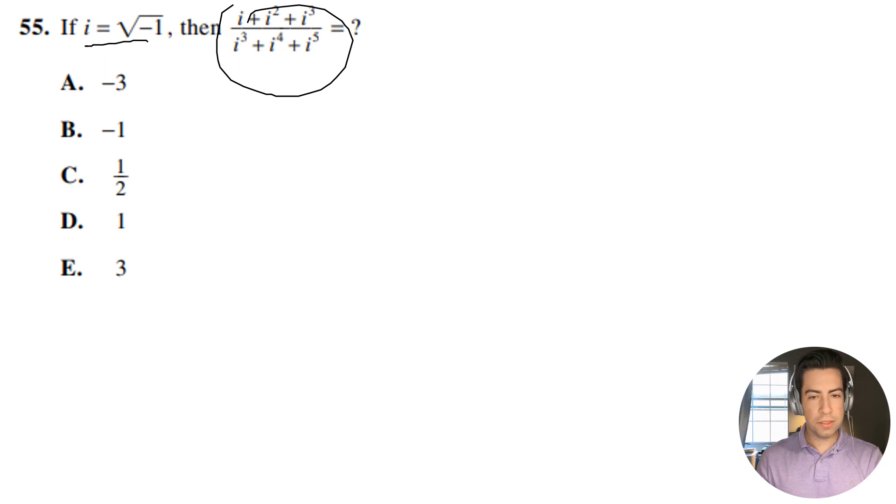So what I like to do is start by factoring out some i's here. We can factor out i on the top, so it'll be i and then 1 plus i plus i squared. And then on the bottom we can factor out an i cubed. So I'll have 1 plus i plus i squared.